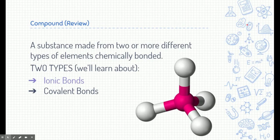Let's do a quick review. What's a compound? A compound is a substance made from two or more different types of elements that are chemically bonded. We're learning about two different types of compounds: ionic compounds and covalent compounds. We learned about simple ionic compounds last week and will learn about complex ones this week. We'll learn about covalent compounds in a future module.